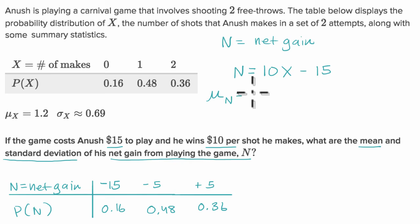So the mean of N is going to be 10 times the mean of X minus 15, which is equal to 10 times 1.2 minus 15. This is 1.2. So it is 12 minus 15, which is equal to negative three.